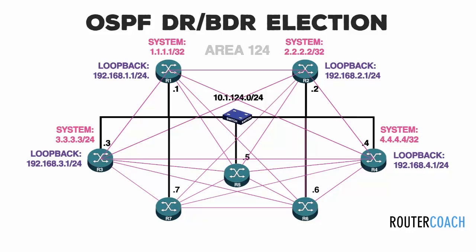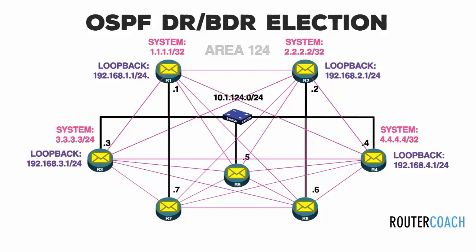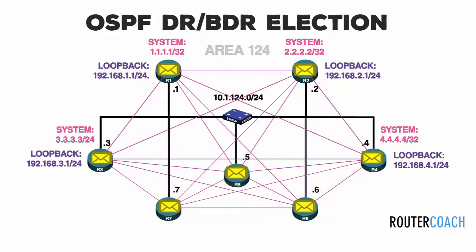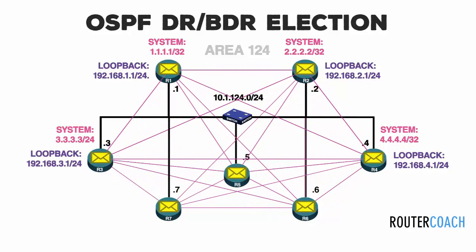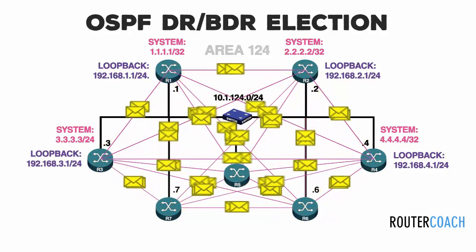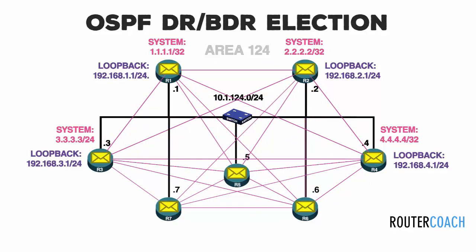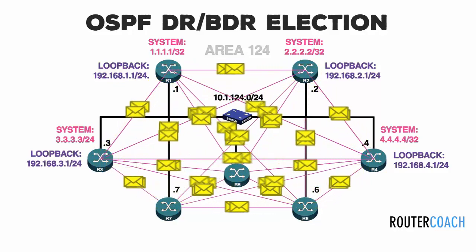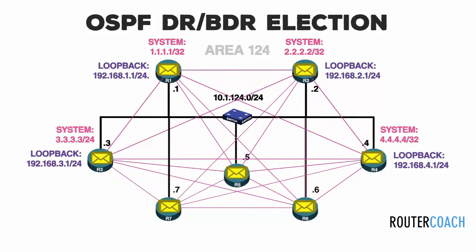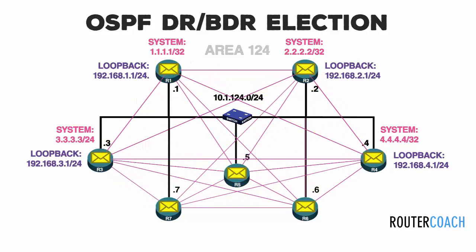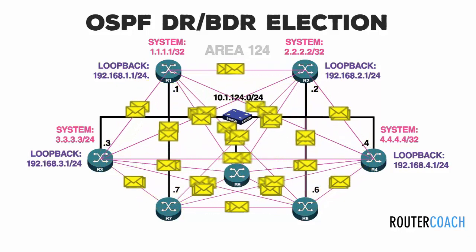And remember, this is just in one direction. In a real network situation, each router would then propagate those same LSAs onto each of their neighbours, potentially resulting in a massive amount of LSAs sent for each link change.